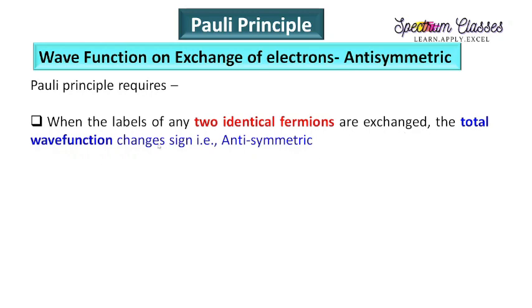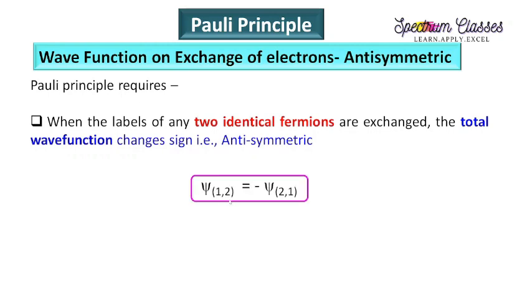Pauli's principle requires that when the labels of any two identical fermions are exchanged, the total wave function changes sign — that is anti-symmetry. Electrons are fermions, and fermions are those particles which have spin equal to half-integral. When the electrons are exchanged, if the wave function changes its sign, then that is termed an anti-symmetric wave function, and Pauli's principle is applicable to such anti-symmetric wave functions.